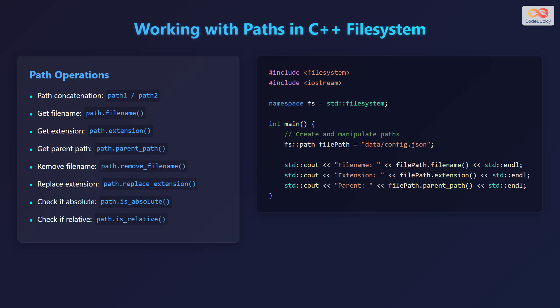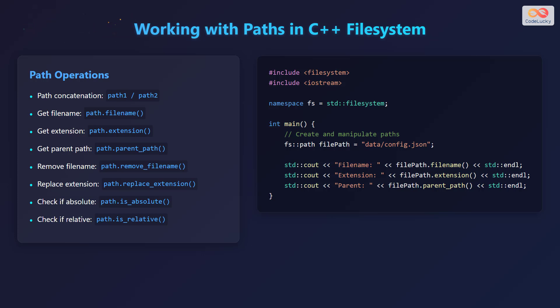You can check if a path is absolute using the is_absolute() method, and check if it is relative using the is_relative() method. Here is an example of how to create and manipulate paths. We create an fs::path variable named file_path and assign it the value "data/config.json". Then we print the file name, extension, and parent path of the file_path to the console.